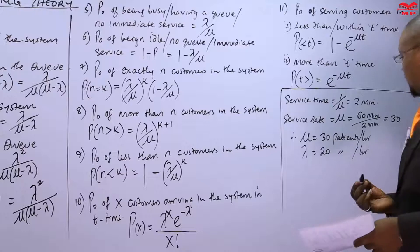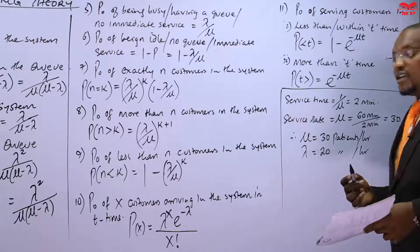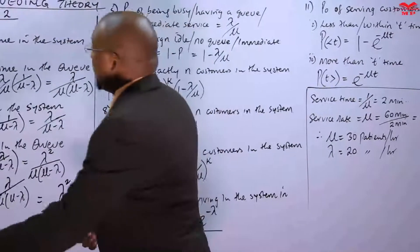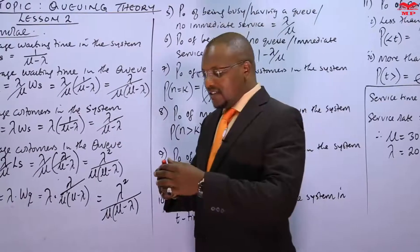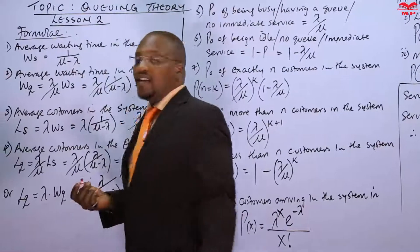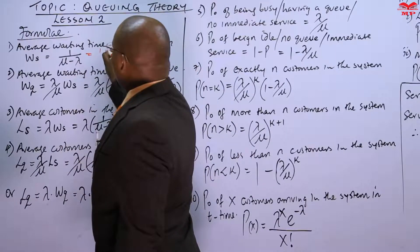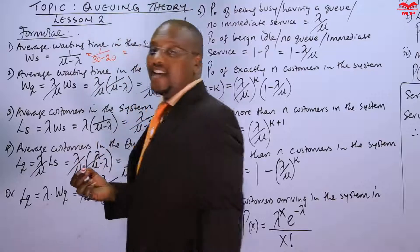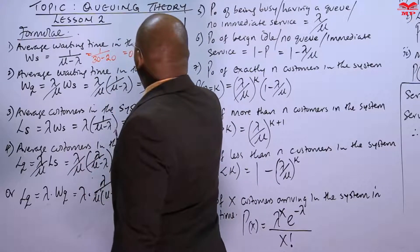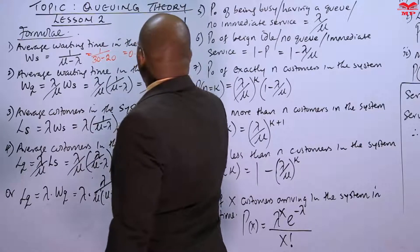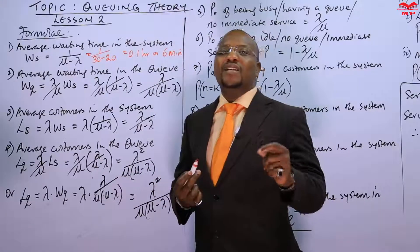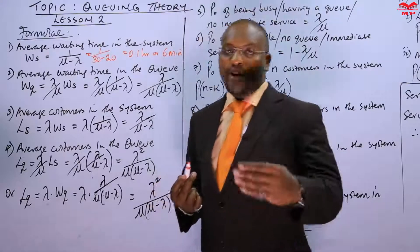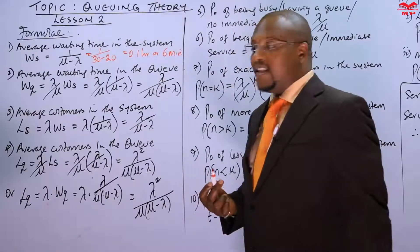Now we just want to use all those formulas to answer this case. Starting with number one: the average waiting time in the system. The waiting time in the system, WS, is going to be 1 divided by the service rate minus the arrival rate. This is 1 divided by 30 minus 20, which is 1 over 10, which is 0.1 hours. Or we can say it is 6 minutes — take 0.1 hours and multiply by 60 minutes, which gives 6 minutes. So the average waiting time in the system, whether you are being served or waiting, is 6 minutes or 0.1 hours in the facility.